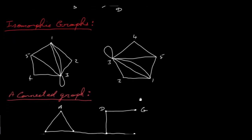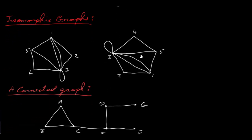Next we have isomorphic graphs. Two graphs are isomorphic if they have the same nodes and same edges — so they're identical or isomorphic. I've drawn two here, and these two graphs are isomorphic. They have the same edges and same nodes, just in a different orientation.